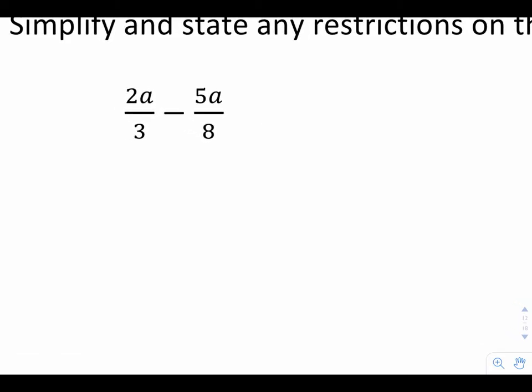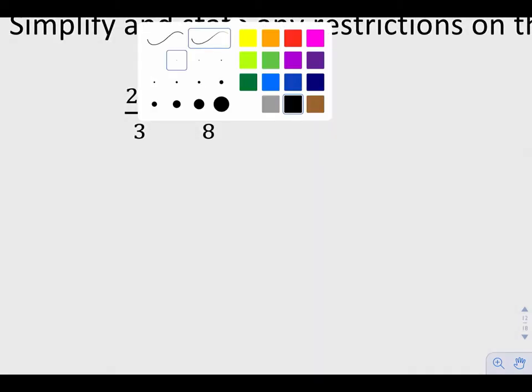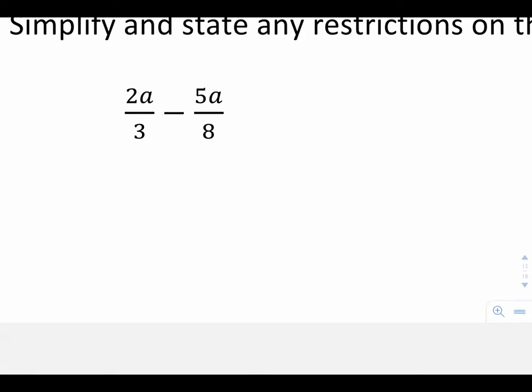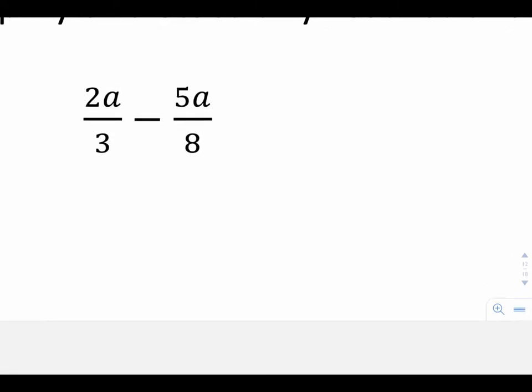So in order to combine these two fractions together, I need to have a common denominator. So what I'm going to do is figure out the lowest common multiple or lowest common denominator of 3 and 8.